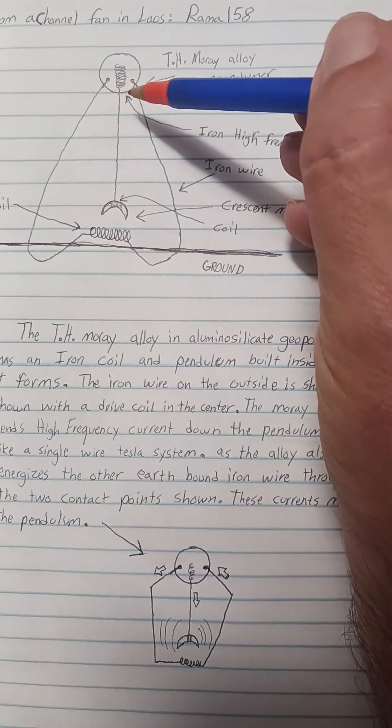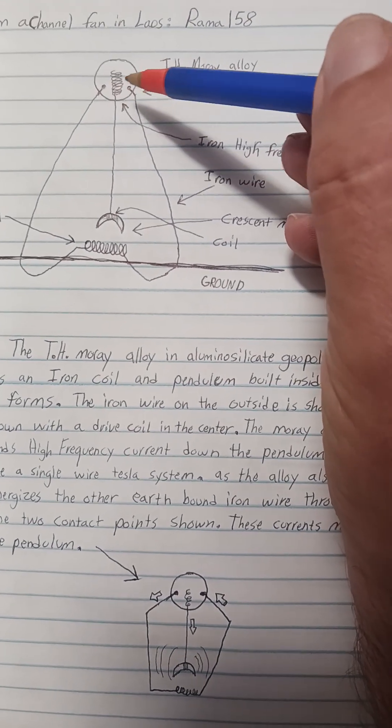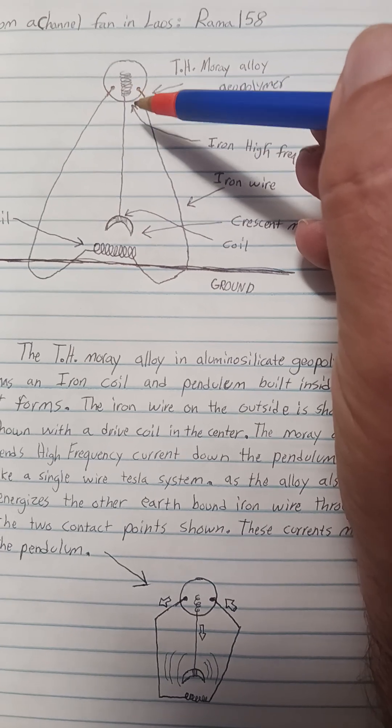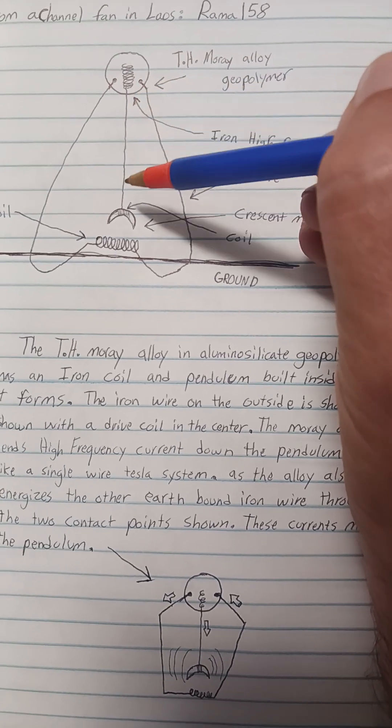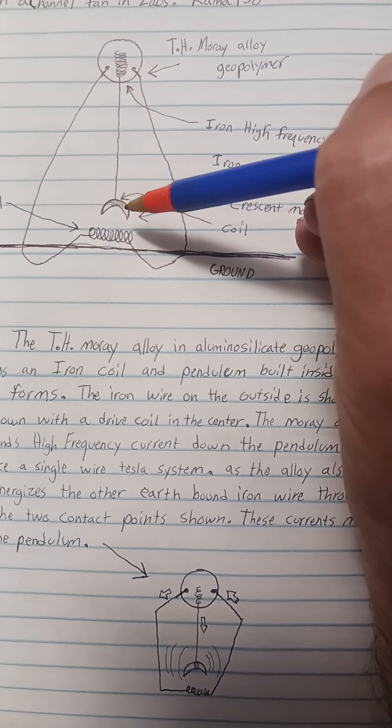You build the alloy around the coil here, very thin iron, which makes it into a pendulum down here, wrapped around a crescent magnet.